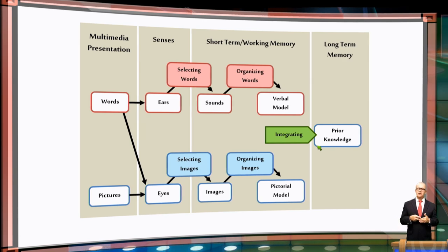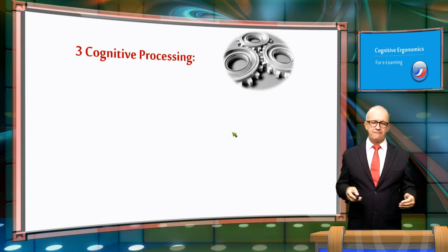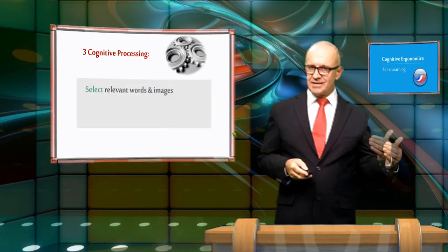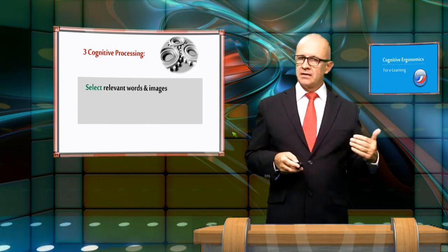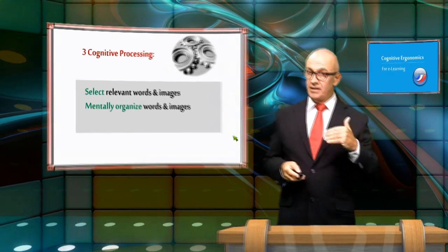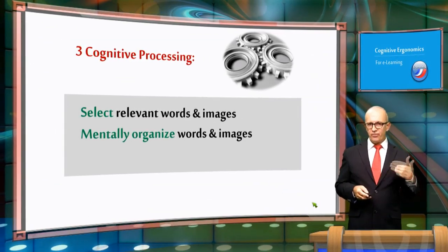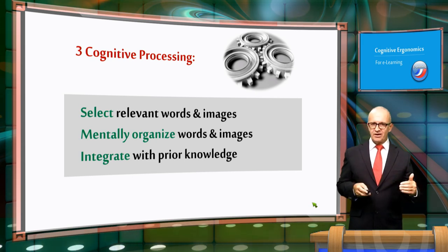To summarize, there are three important cognitive processes. Firstly, select relevant words and images. Secondly, mentally organize words and images. Thirdly, integrate the incoming knowledge with the existing knowledge.